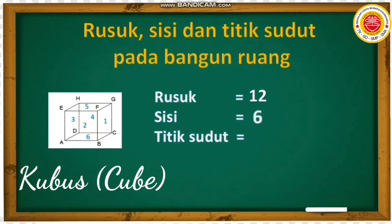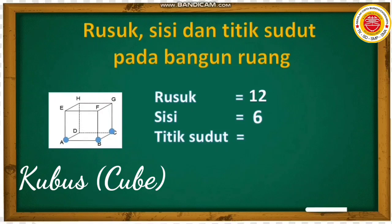Sekarang kita menentukan titik sudut. Masih ingat apa itu titik sudut? Titik sudut adalah pertemuan antara tiga sisi atau tiga rusuk pada bangun ruang. Jadi yang di ujung-ujung ini disebutnya titik sudut. Yuk kita hitung titik sudutnya: satu, dua, tiga, empat, lima, enam, tujuh, delapan. Jadi titik sudut bangun ruang kubus berjumlah delapan.